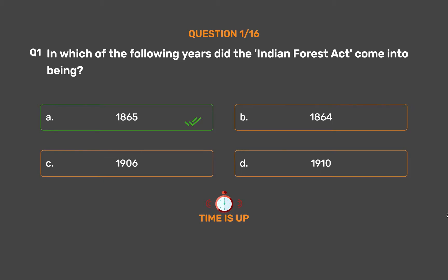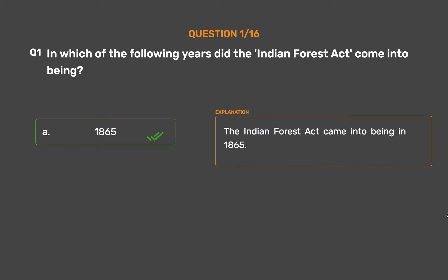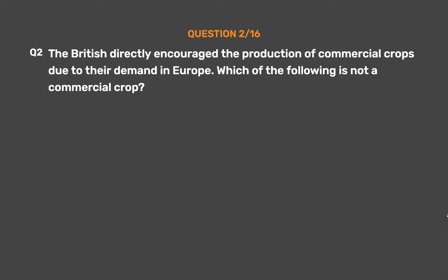The correct answer is Option A, 1865. The Indian Forest Act came into being in 1865. Question 2: The British directly encouraged the production of commercial crops due to their demand in Europe. Which of the following is not a commercial crop?